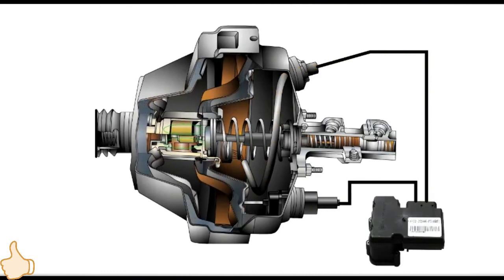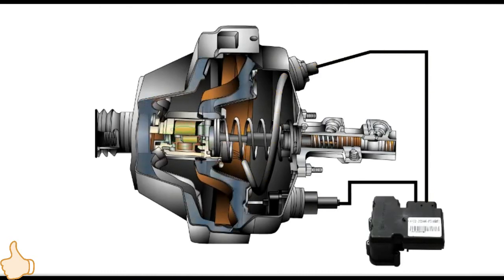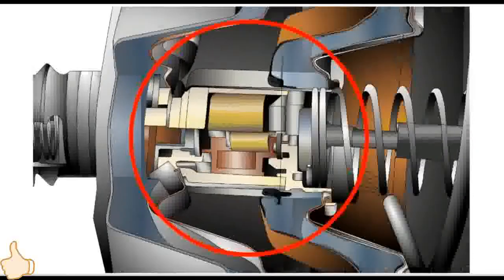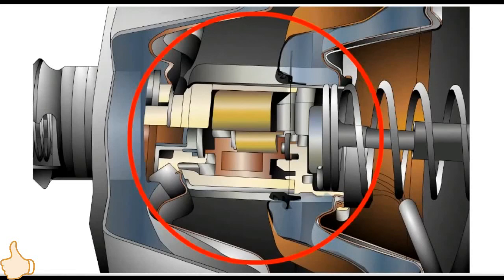The active brake booster solenoid releases vacuum from the rear chamber of the brake booster upon command from the Advanced Track system. If this solenoid fails, it may set a DTC and illuminate the Advanced Track off indicator light.